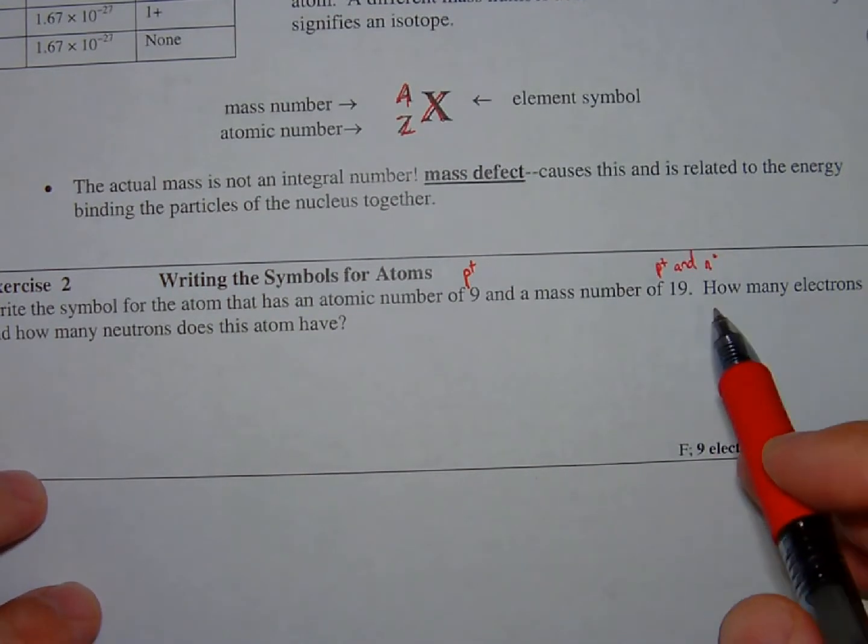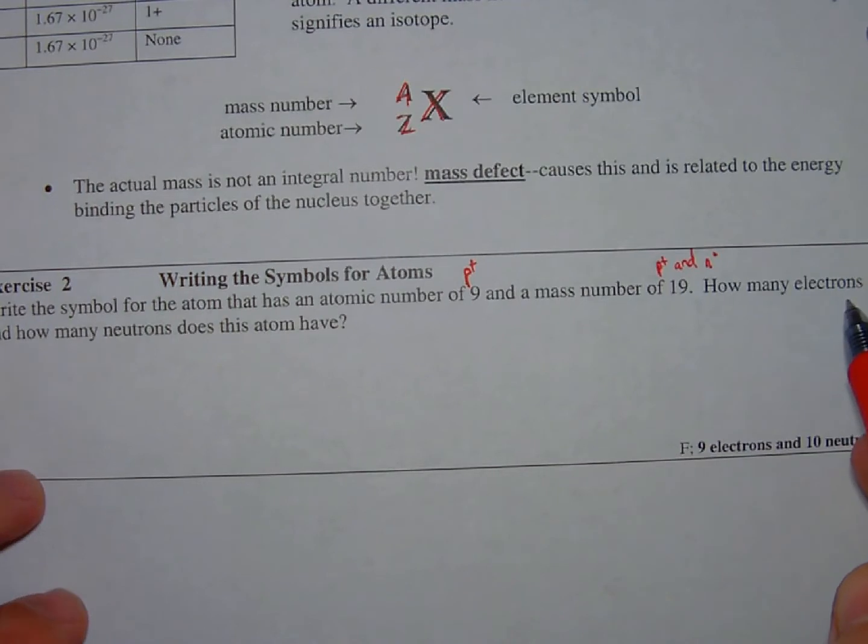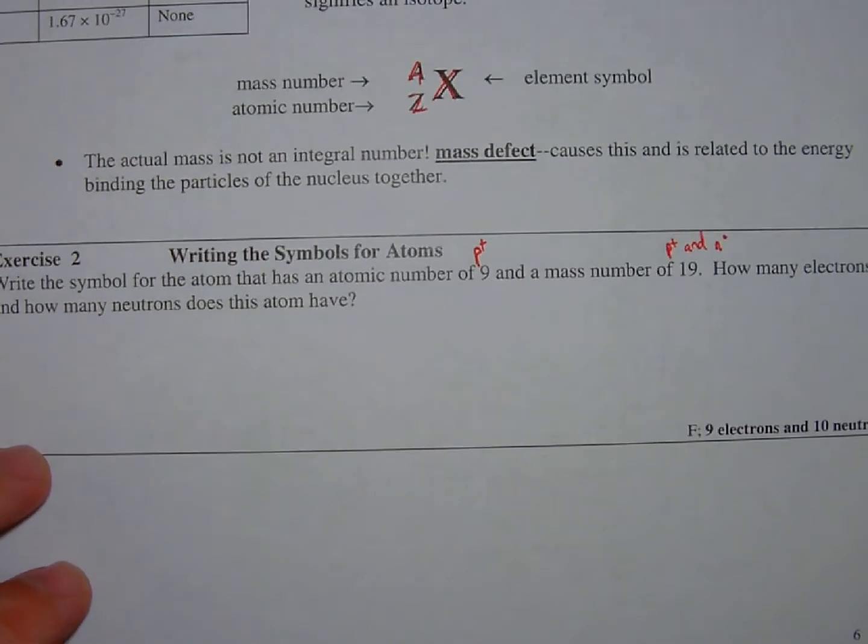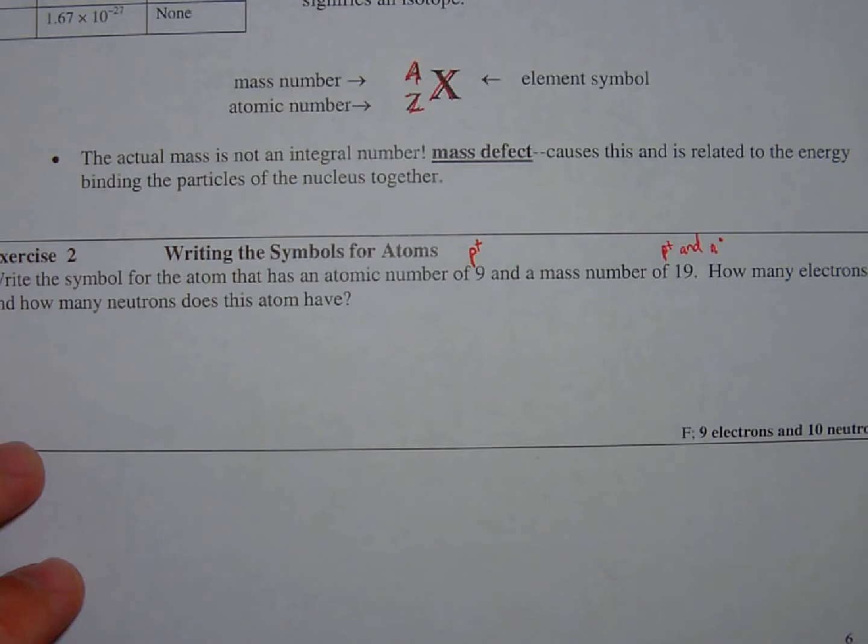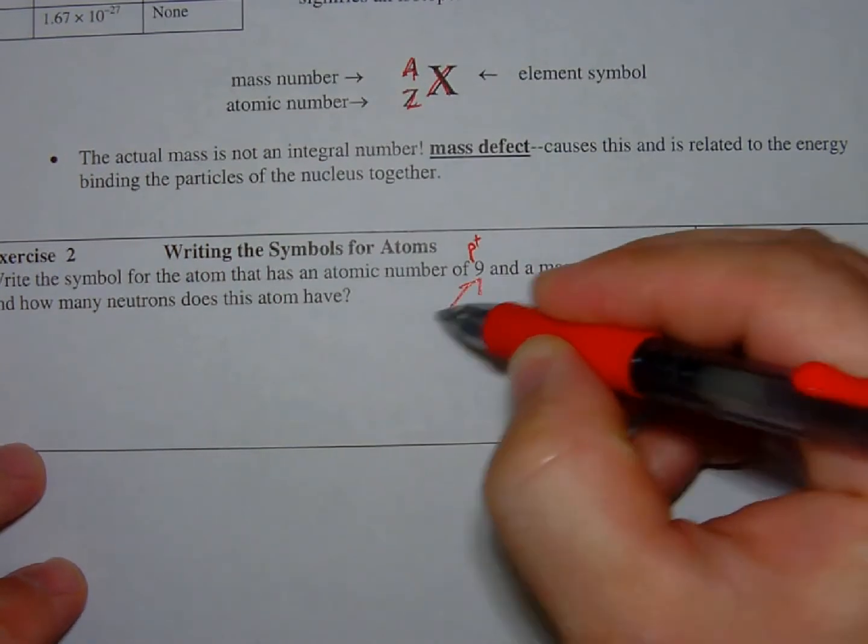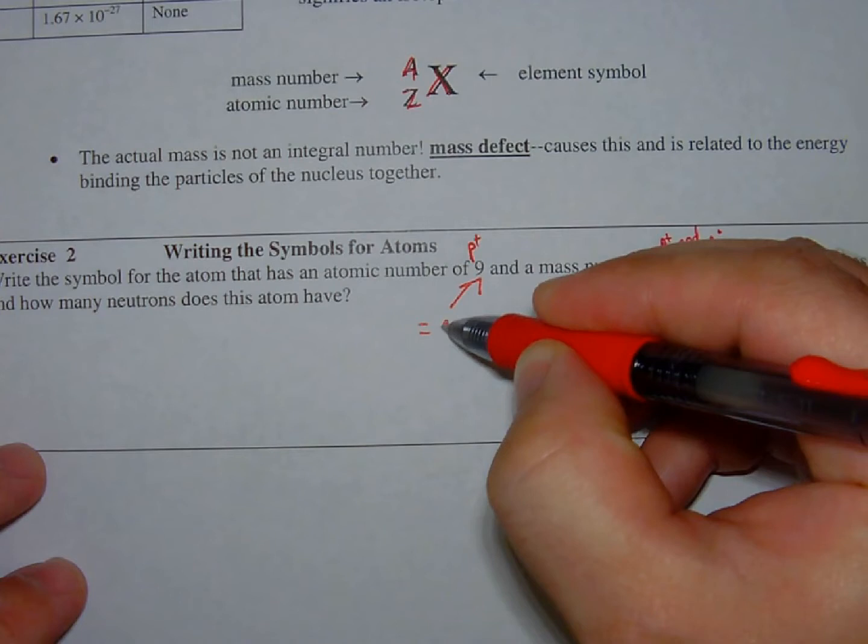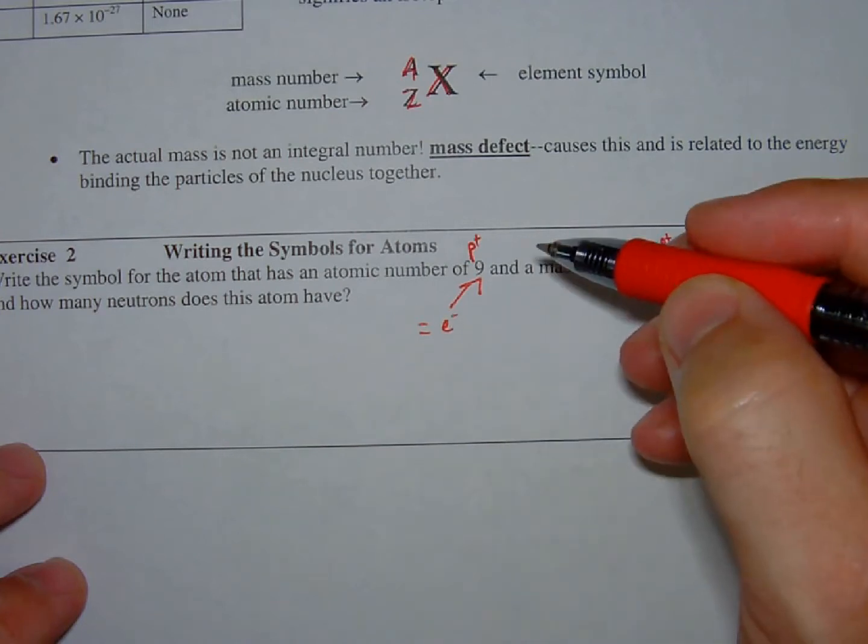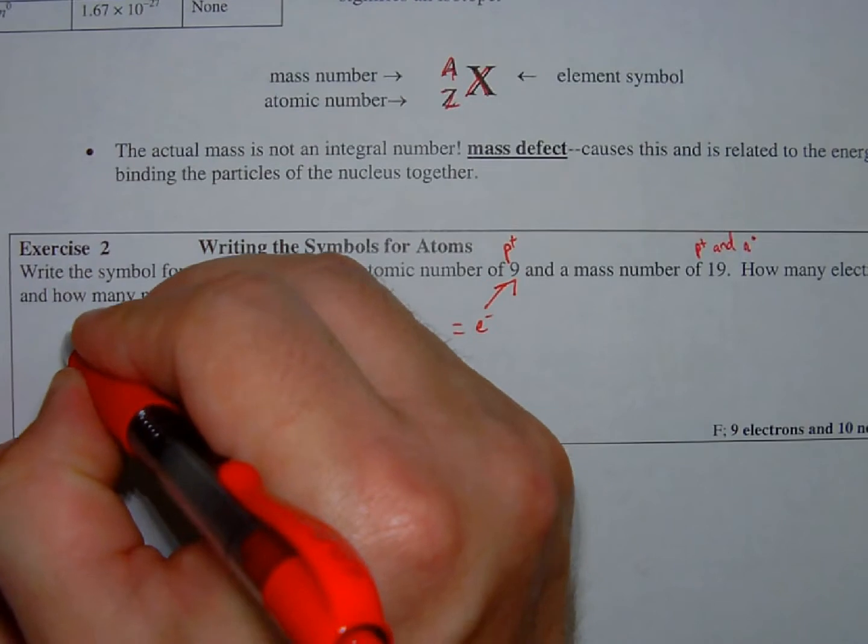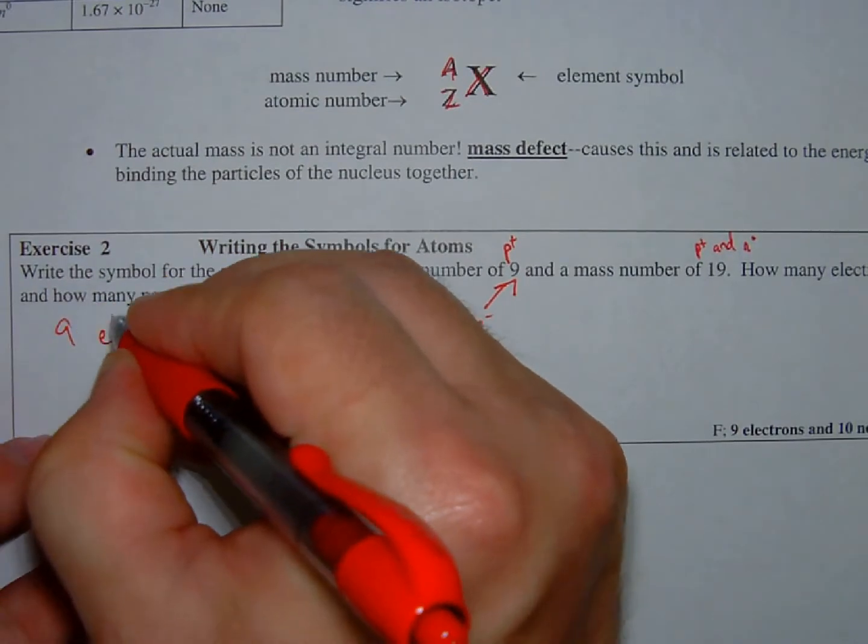First question, how many electrons? Well, unless it says otherwise, we are going to assume that this element, this atom, is neutral in charge. So that means however many protons we have is equal to the number of electrons. So we conclude that this atom has nine electrons.